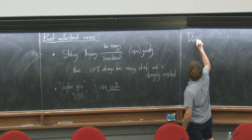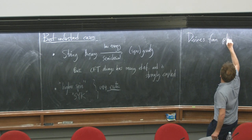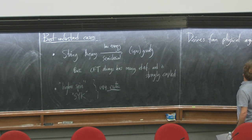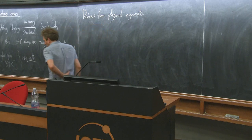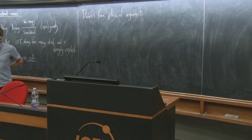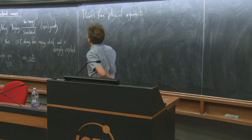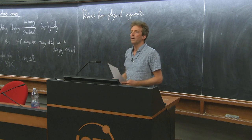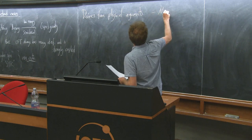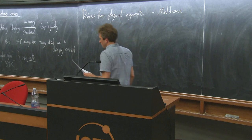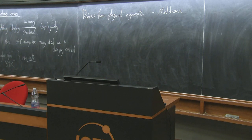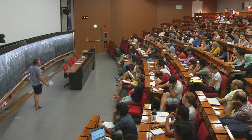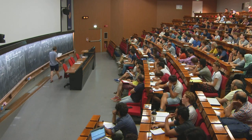Where did this conjecture come from? It derives from physical arguments. As with many interesting statements that are difficult to prove in physics, there's usually some relatively simple physical intuition. This was Maldacena over 20 years ago, who understood by thinking about D-branes in string theory that there were essentially two ways to look at the same system - one of those ways looks like a CFT, and the other looks like gravity with some asymptotics.